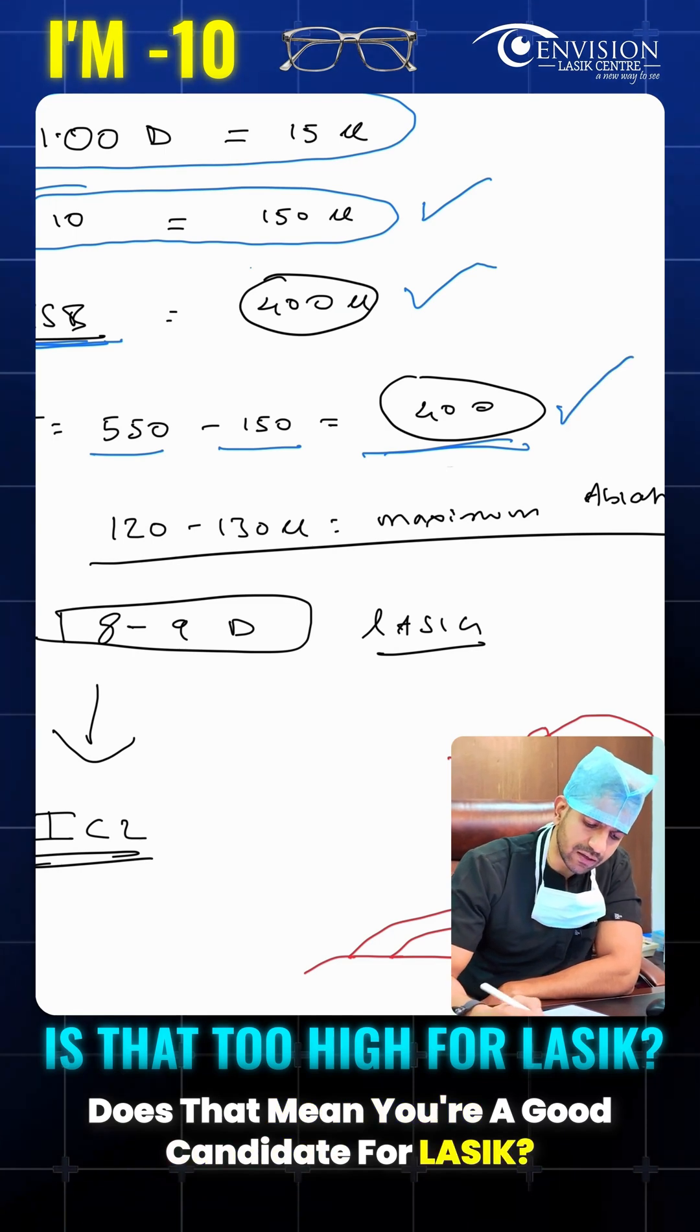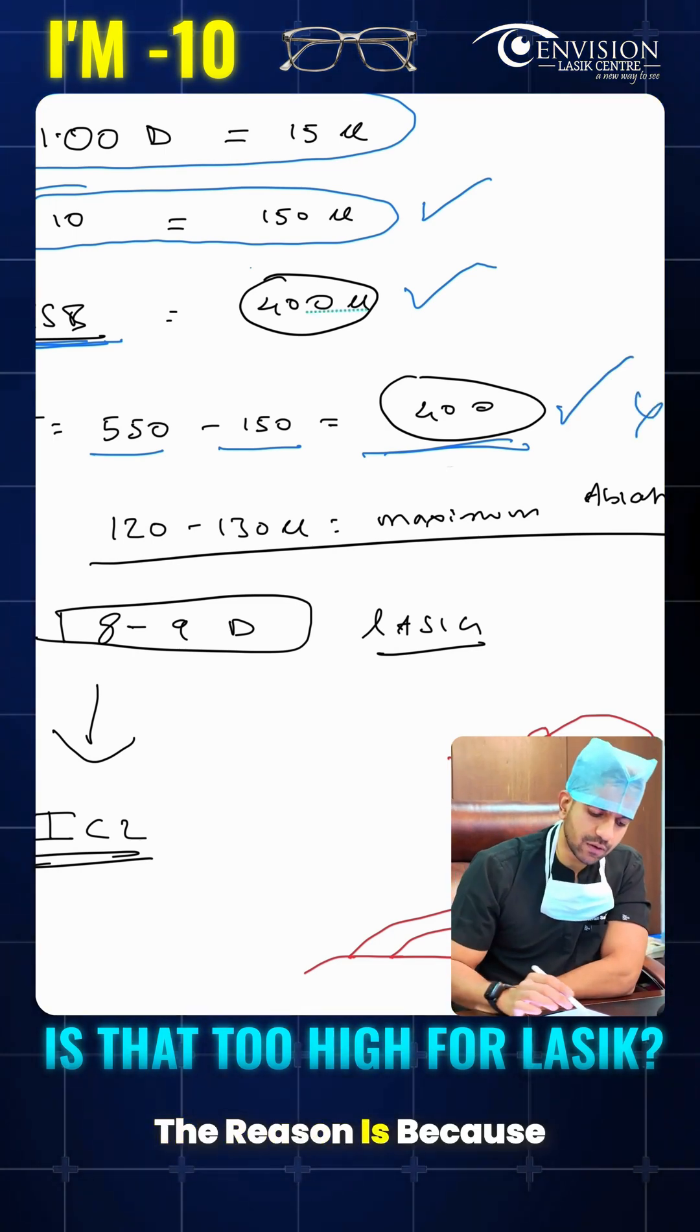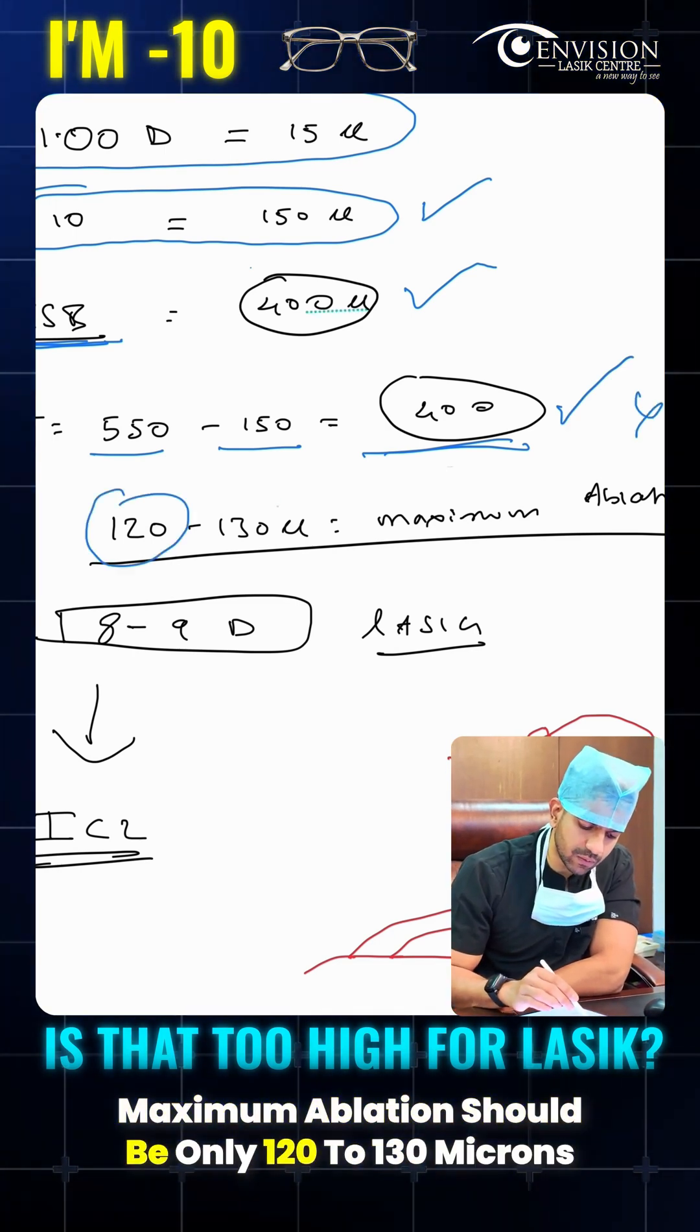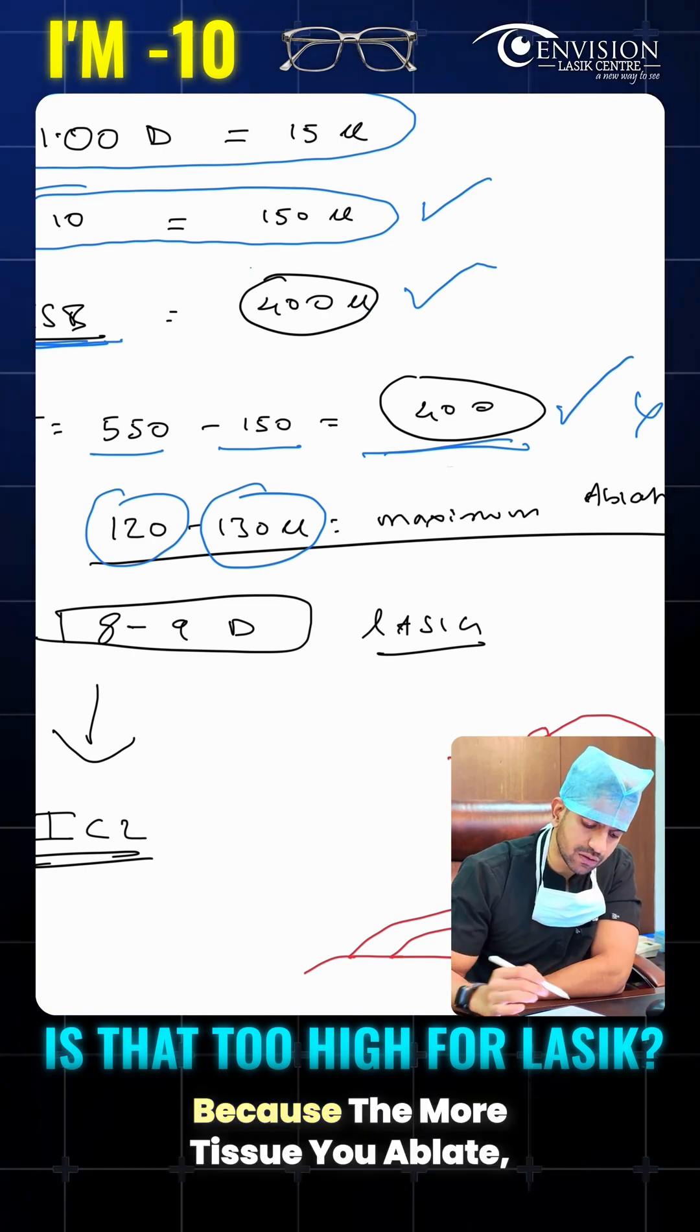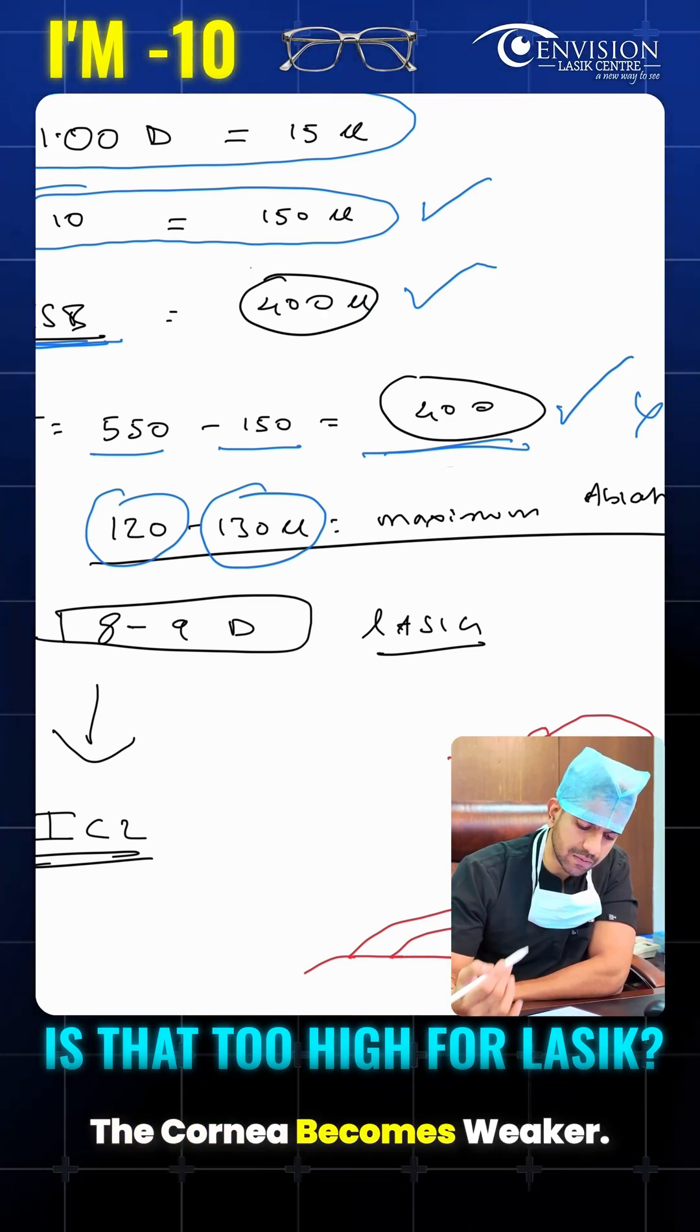Does that mean you're a good candidate for LASIK? No. The reason is because maximum ablation should be only 120 to 130 microns. Because the more tissue you ablate, the cornea becomes weaker.